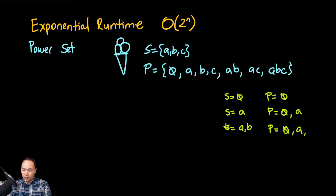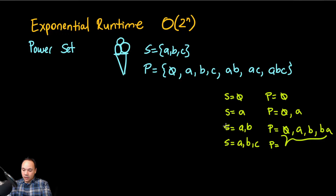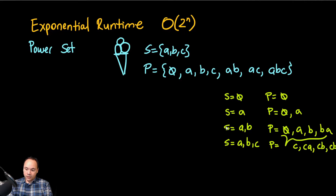So with two elements you get: B, or A and B. When you have three elements, you take whatever the result was for two elements and add C on top. So you get the same results as before, then C, C+A, C+B, and C+B+A. The order doesn't matter — cookies and syrup is the same as syrup and cookies; it all goes on the ice cream.